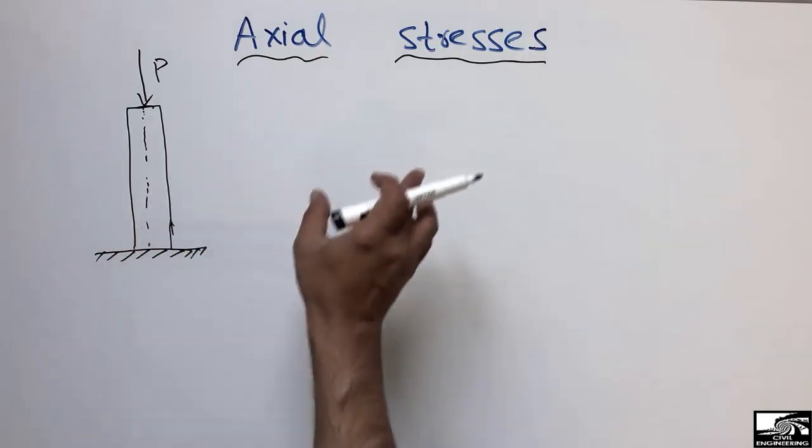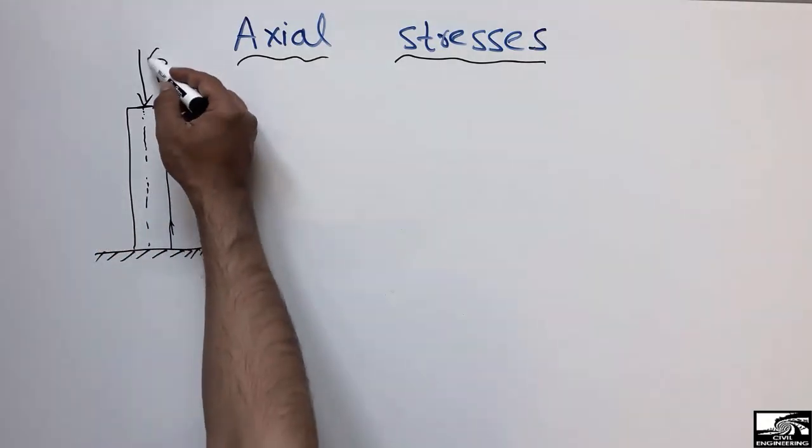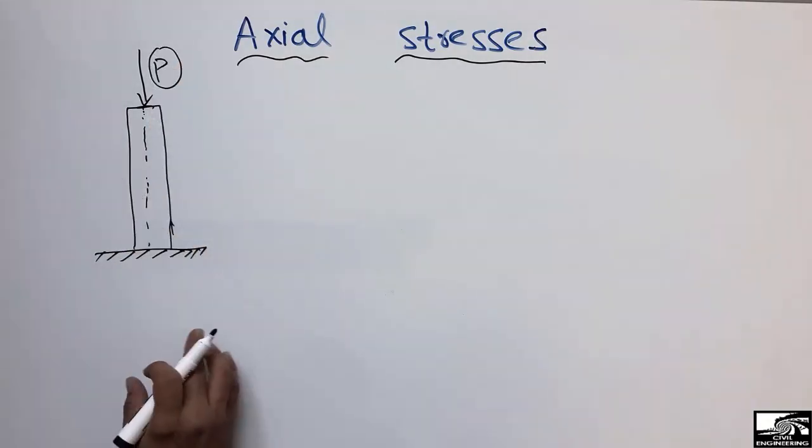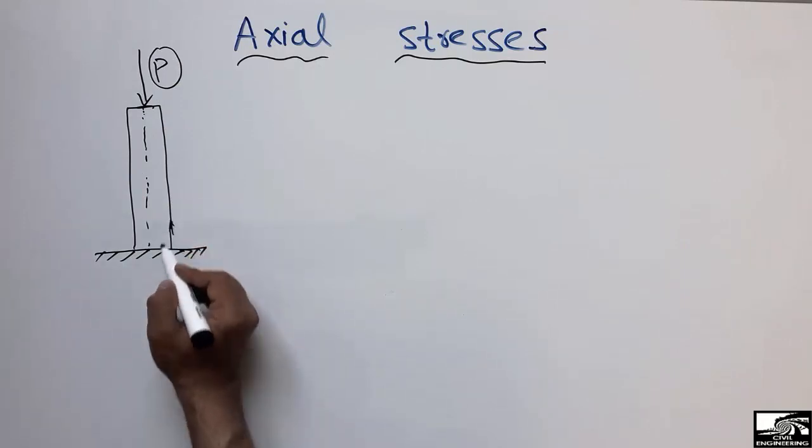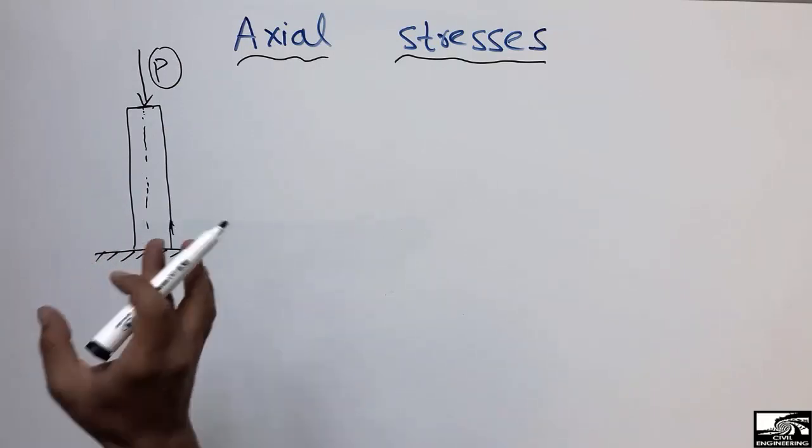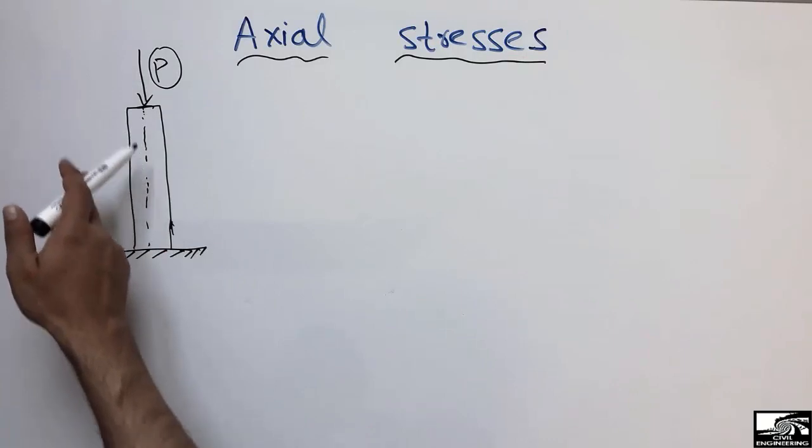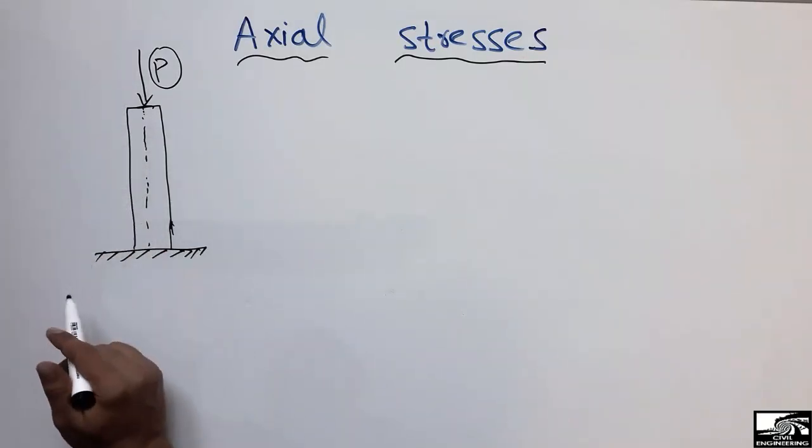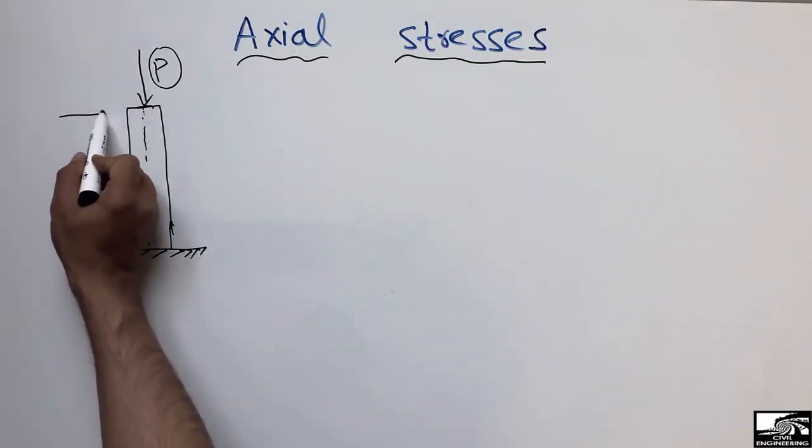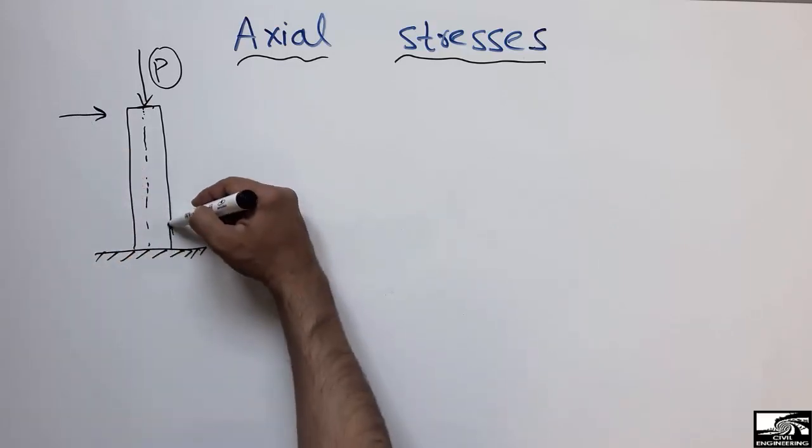The column is a compression member and it always has axial stresses because the load always acts along the axis of the member. Sometimes we also design the column for lateral load which creates flexural stresses in the column and the column will bend in this way.